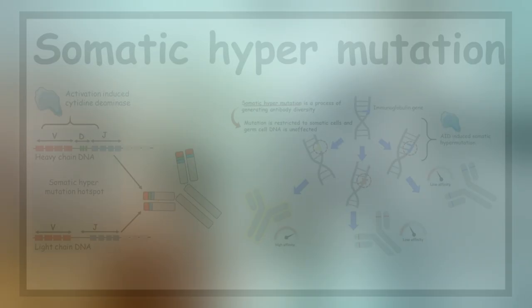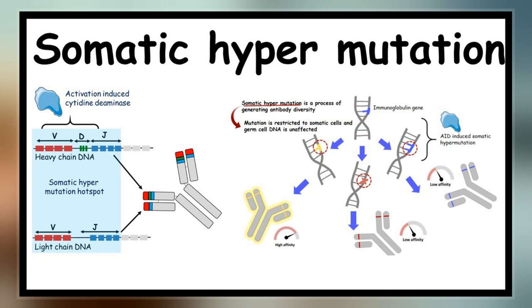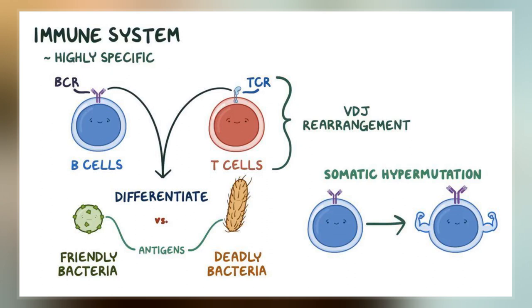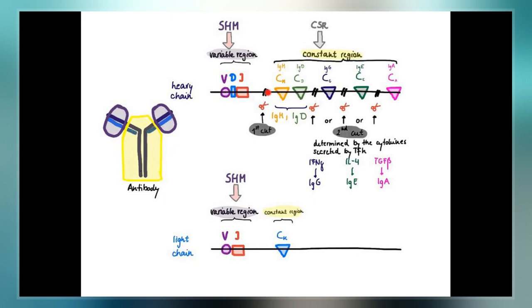Somatic hypermutation is a cellular mechanism by which the immune system adapts to the new foreign elements that confront it, as seen during class switching. A major component of the process of affinity maturation, SHM diversifies B cell receptors used to recognize foreign elements and allows the immune system to adapt its response to new threats during the lifetime of an organism.